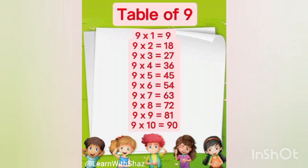9 ones are 9. 9 twos are 18. 9 threes are 27. 9 fours are 36. 9 fives are 45.